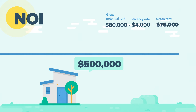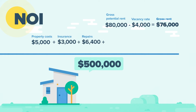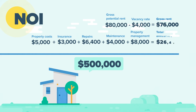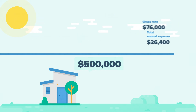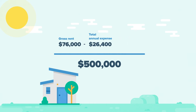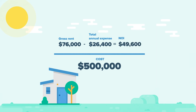Minus a 5% vacancy rate ($4,000) equals $76,000 in annual gross rent. Annual expenses include: $5,000 in property taxes, $3,000 in insurance, 8% or $6,400 in repairs, 5% or $4,000 in maintenance, and 10% or $8,000 in property management — for a total annual expense of $26,400. Subtracting $26,400 from $76,000 gives a net operating income of $49,600. Dividing that by the $500,000 acquisition cost gives a cap rate of 9.92%.